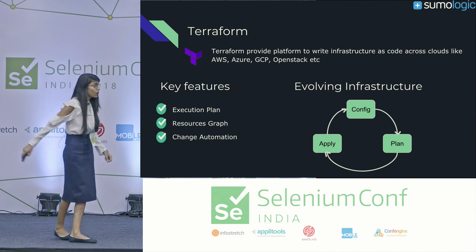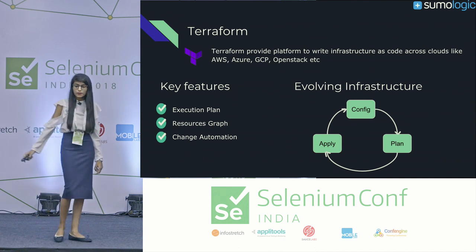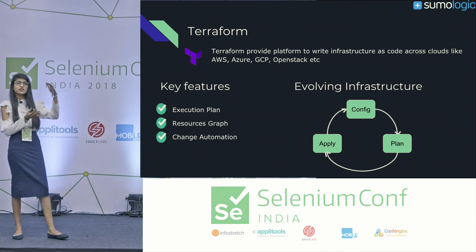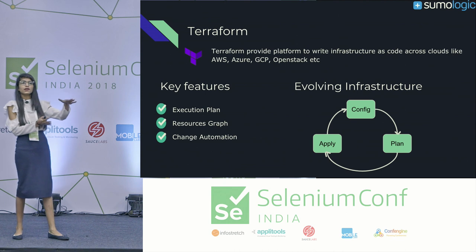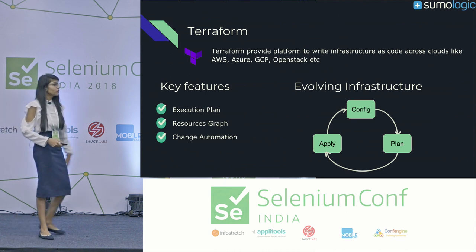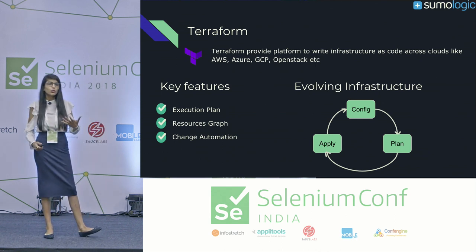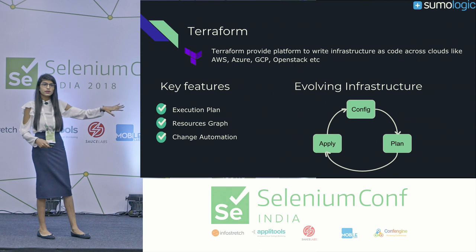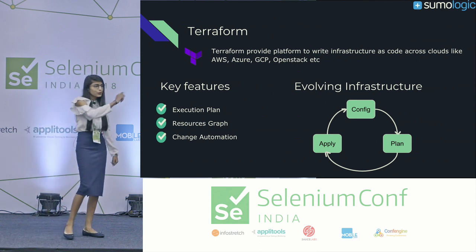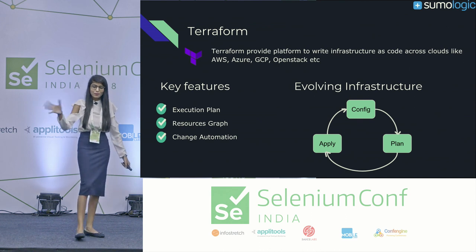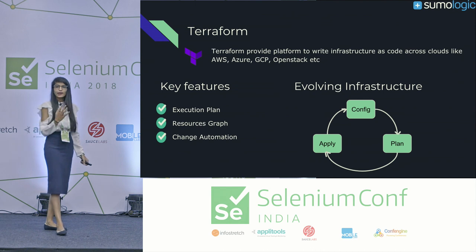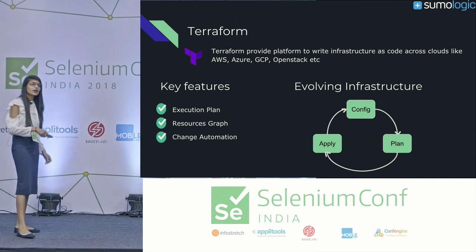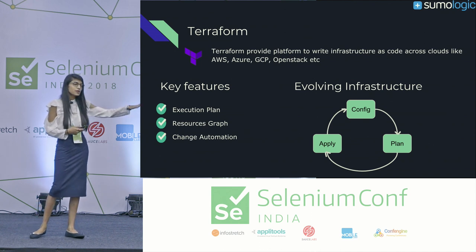In Terraform, everything is config-driven. You define what your infrastructure should look like in a config file, and Terraform takes care of it. You do Terraform plan — if everything looks good — then Terraform apply, and the cycle continues. This is similar to software development: you write code, run unit tests, and if they pass you commit the change. If something unexpected happens, you revert and try again.